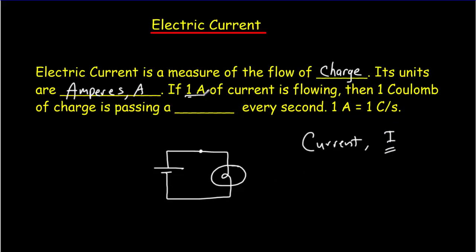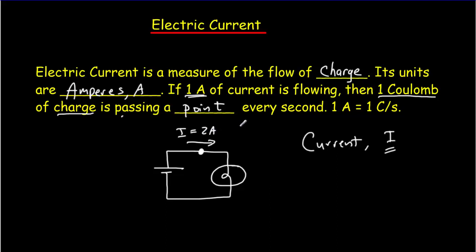What we mean by one ampere of current is that one coulomb of charge is passing a point in the circuit every second. So if I pick out a point in the circuit and say that the current is equal to 2 amperes, that would mean that 2 coulombs of charge are passing that point every second.